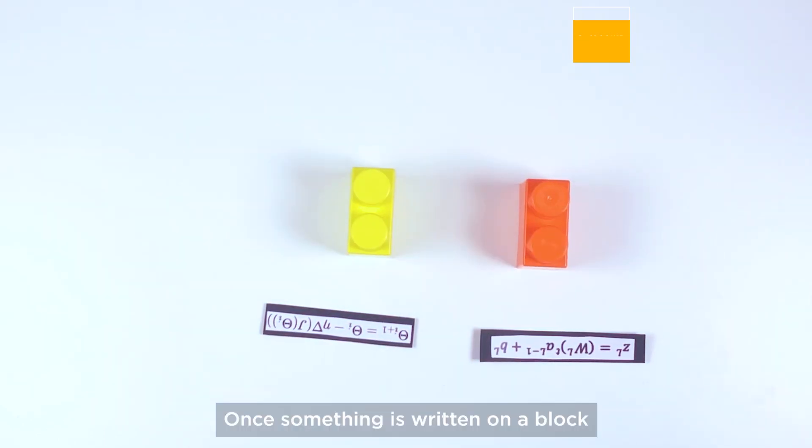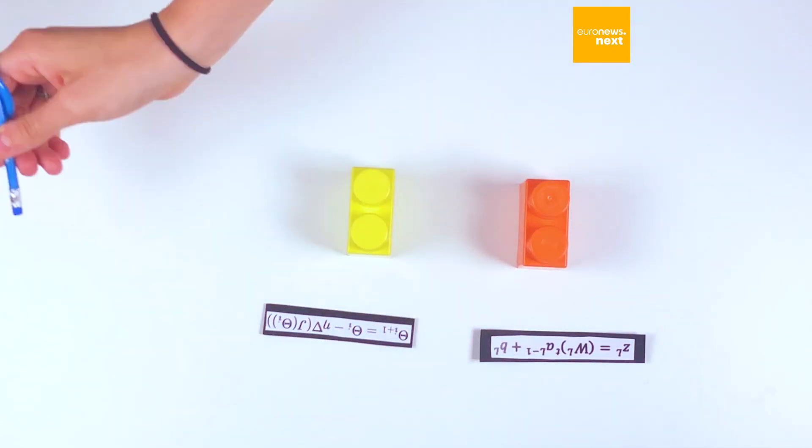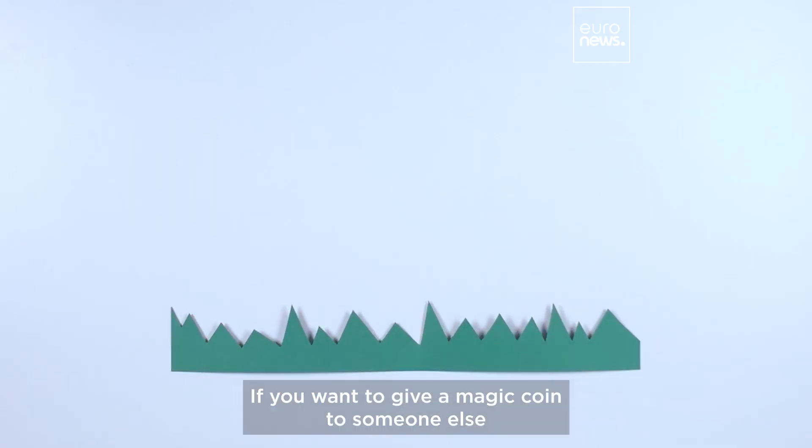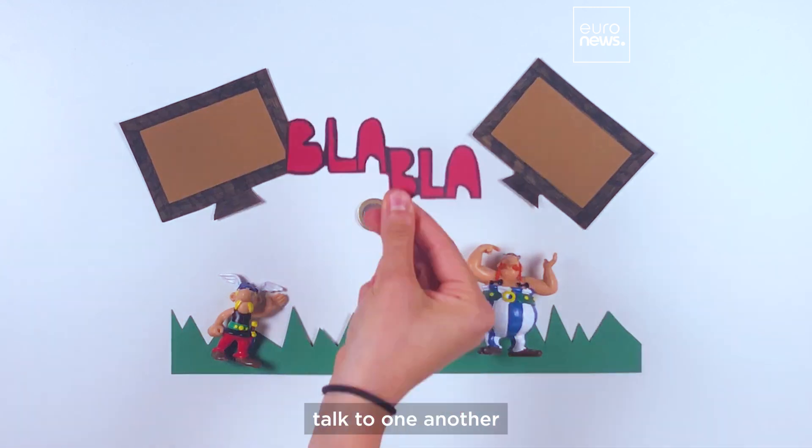Once something is written on a block, it can never be changed or erased. If you want to give a magic coin to someone else, then computers from around the world talk to one another,